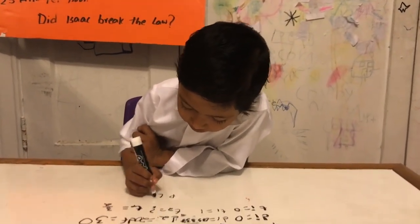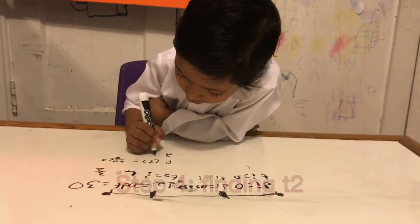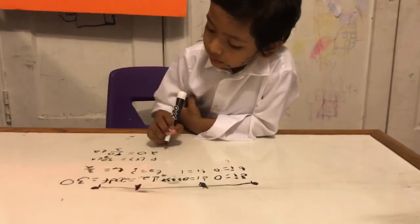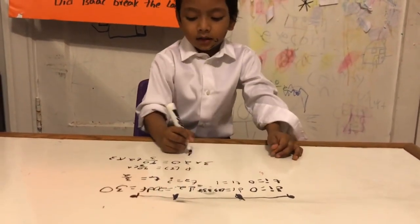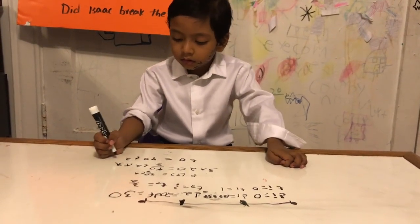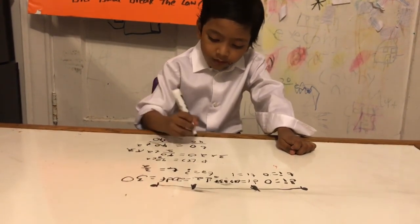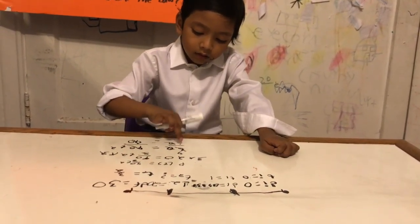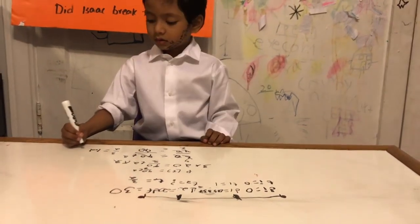So p of t is equal to 40 over 3t squared. So we multiply 3 by each side. So we divide both sides by 40. 40, 40, 40 cancel.